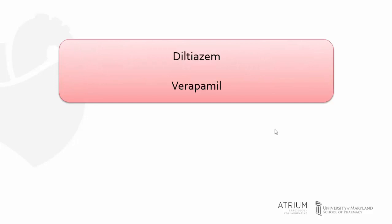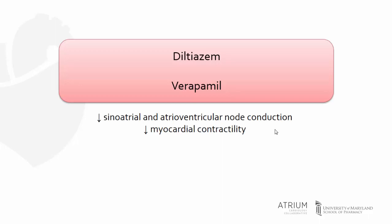Non-dihydropyridine calcium channel blockers, such as diltiazem and verapamil, inhibit calcium channels within nodal tissue, as well as the myocardium. Of these two medications, verapamil is the most selective for cardiac tissue and causes lesser vasodilation than does diltiazem. Because of their impact on the SA and the AV nodes, as well as the myocardium, non-dihydropyridine calcium channel blockers are used predominantly for arrhythmias and angina, and are relatively infrequently used just for hypertension.